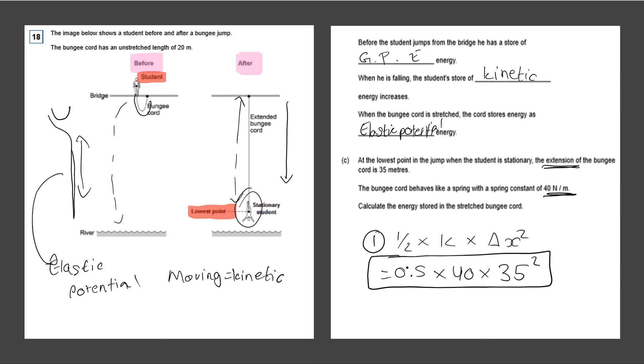So we have 0.5 multiplied by 40 multiplied by 35 squared. This will give us an answer of 24,500. And the answer is measured in joules. If you wanted to, we can convert this to kilojoules, which would be dividing by a thousand. It would give us 24.5 kilojoules.